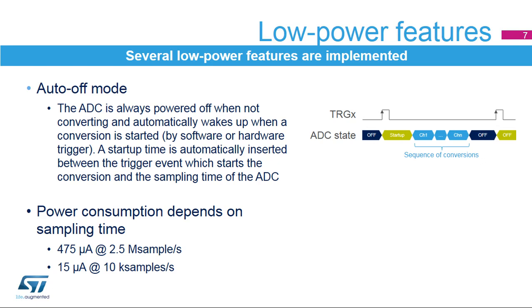The power consumption is a function of the sampling frequency. For low sampling rates, the current consumption is reduced almost proportionately.